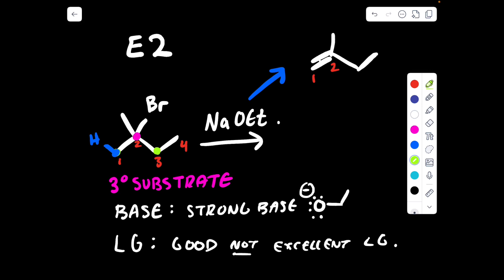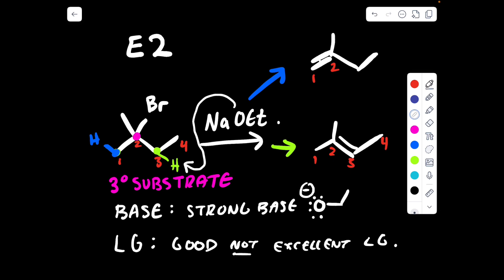And if the base goes and extracts the green hydrogen on carbon number 3, the other beta carbon, we will get a double bond in between carbons 2 and 3. So now the question is, what is the major product? Well, this is determined by the size of the base. This base is not big and bulky — it is relatively small. So it can sneak in and grab the more sterically hindered hydrogen via two in, two over, two out. Therefore, the major product is the more substituted double bond — the Zaitsev product. This is our major.